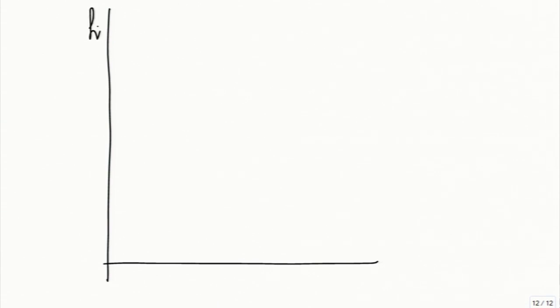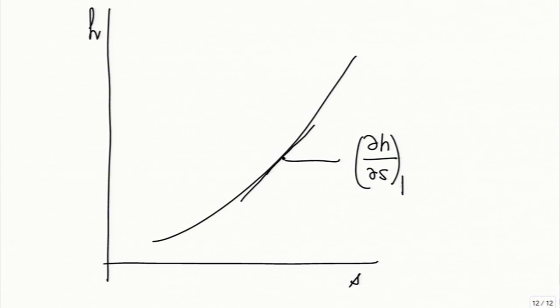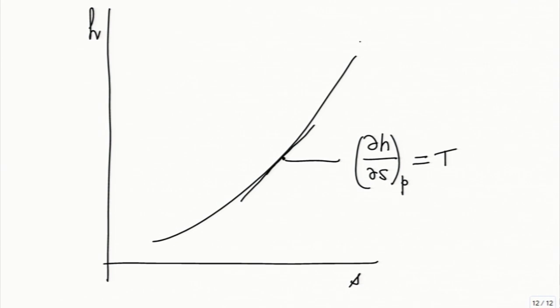This is a basic property relation. If you have an H-s diagram and take a constant pressure line, the tangent to this is the partial of H with respect to S at constant pressure, and you can show that this equals the temperature T. That is the reason why at constant pressure, if you go to higher and higher entropies, the temperature usually rises - except when you are in the two-phase zone. So in the vapor or gaseous phase, the H-s line goes to higher and higher slopes.